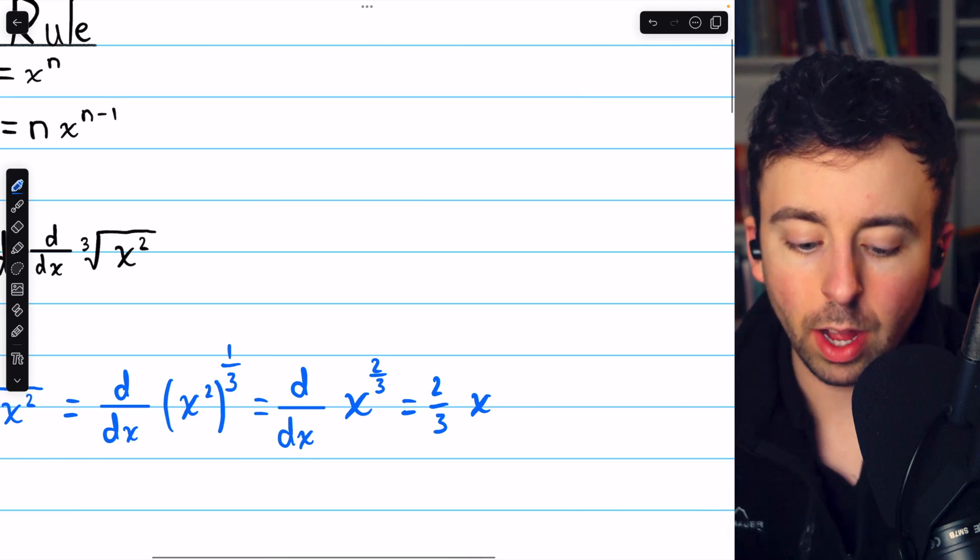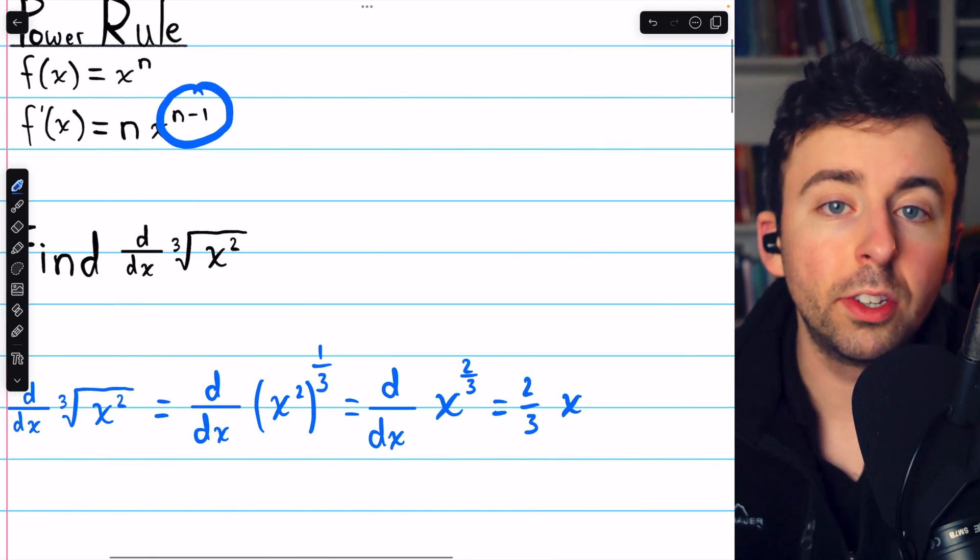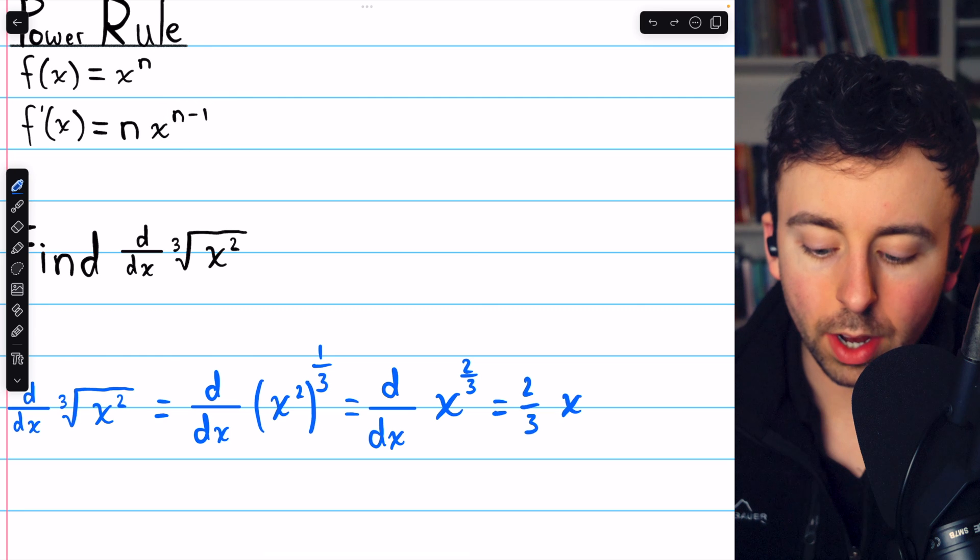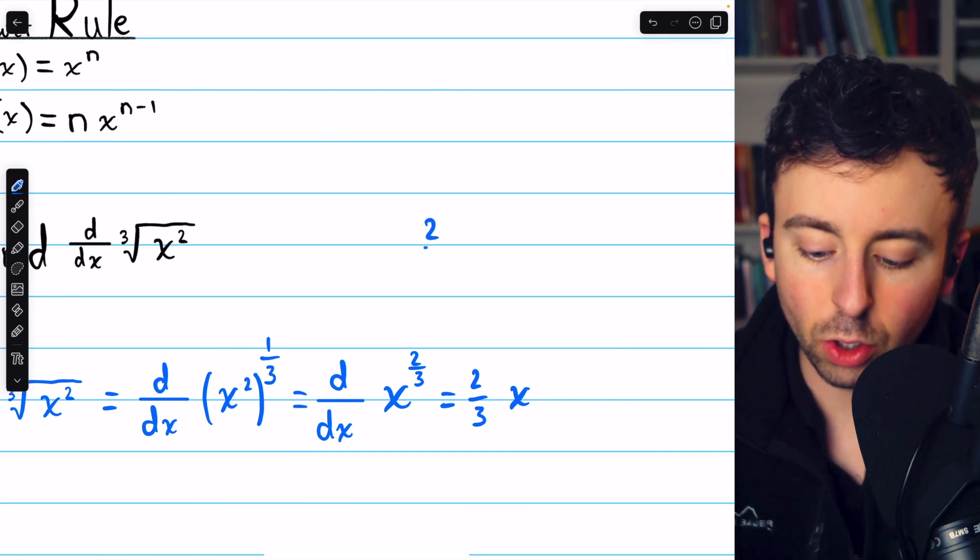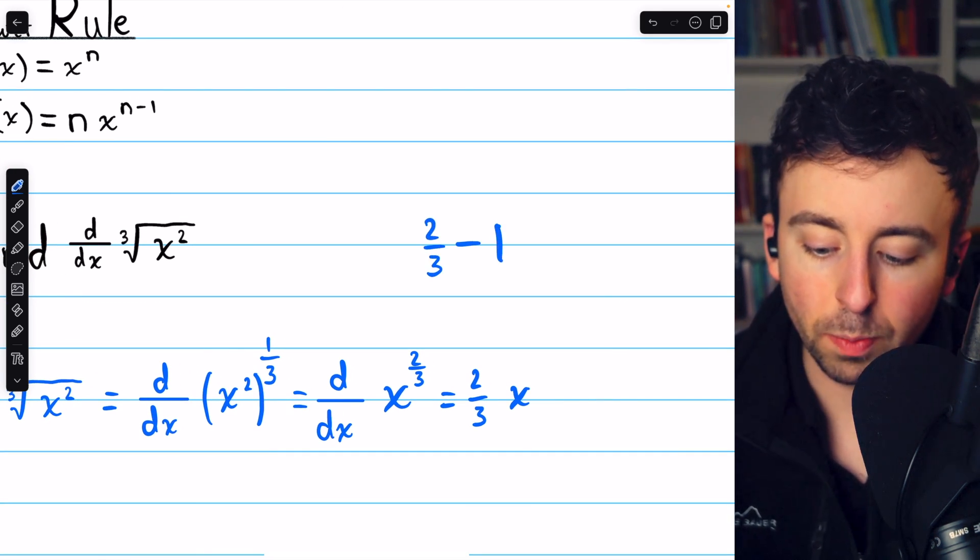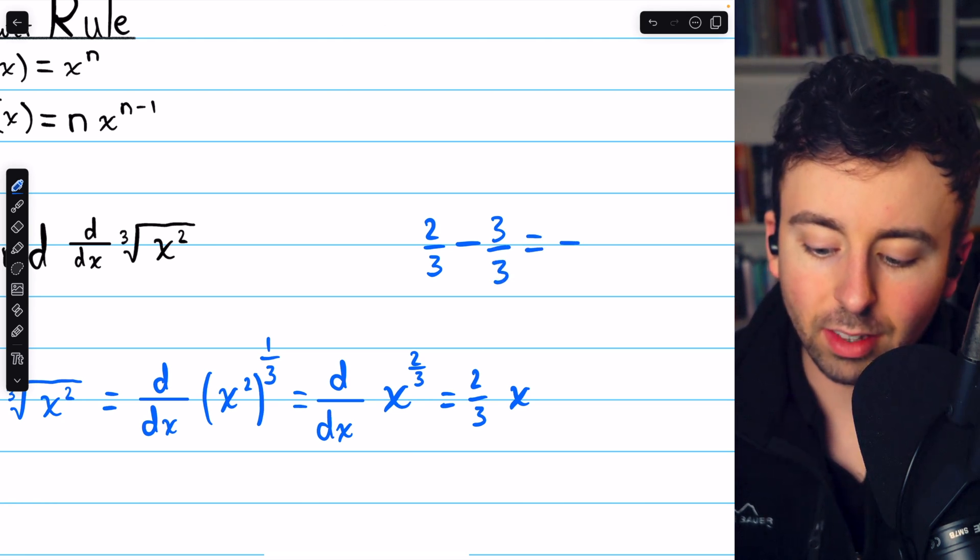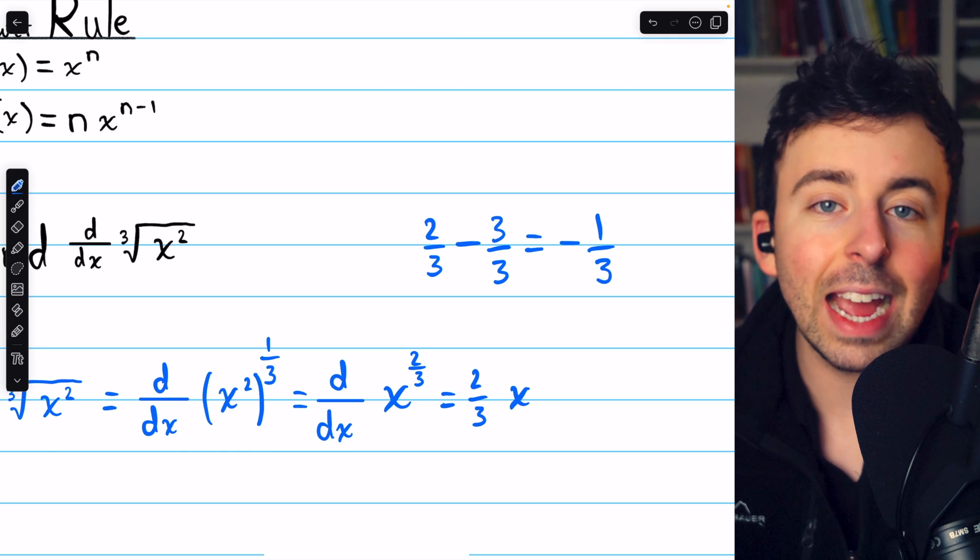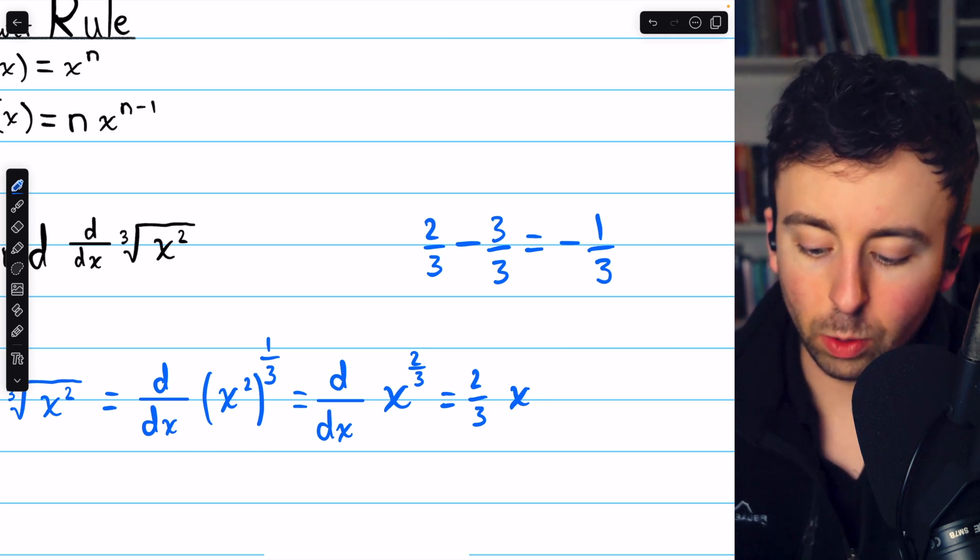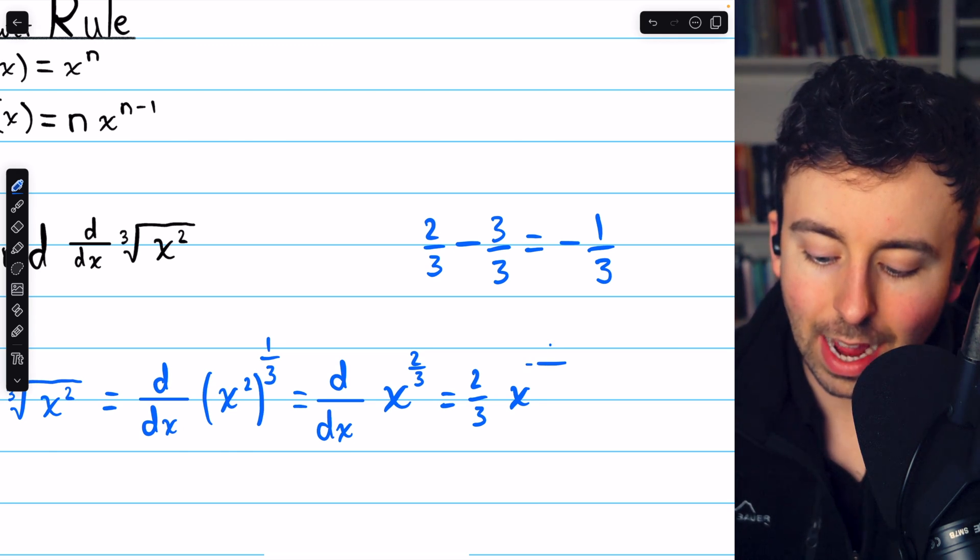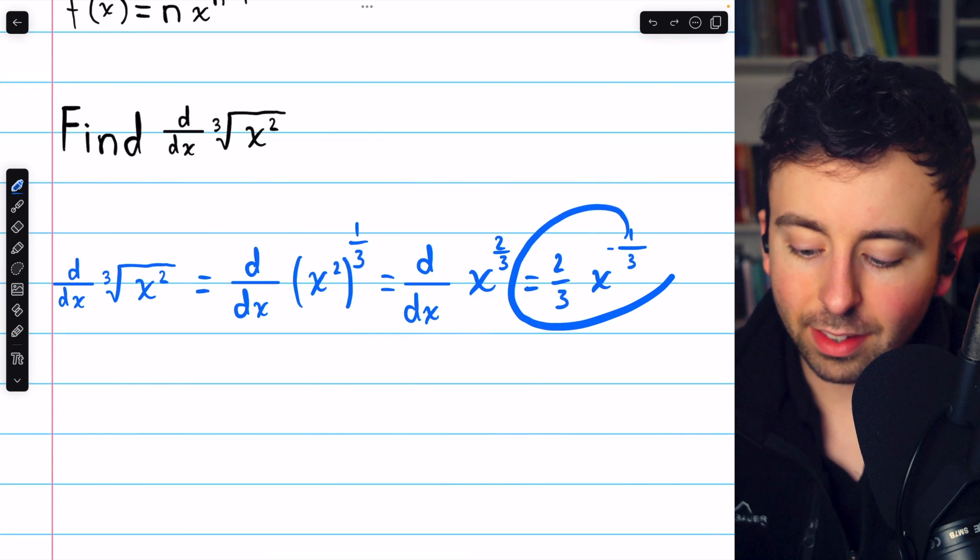Multiplied by x to the power of, we need to reduce the power by one. The power was two-thirds. We need to subtract one. Subtracting one is the same as subtracting three-thirds, and so our new power is negative one-third. So two-thirds x to the negative one-third. And that's the derivative.